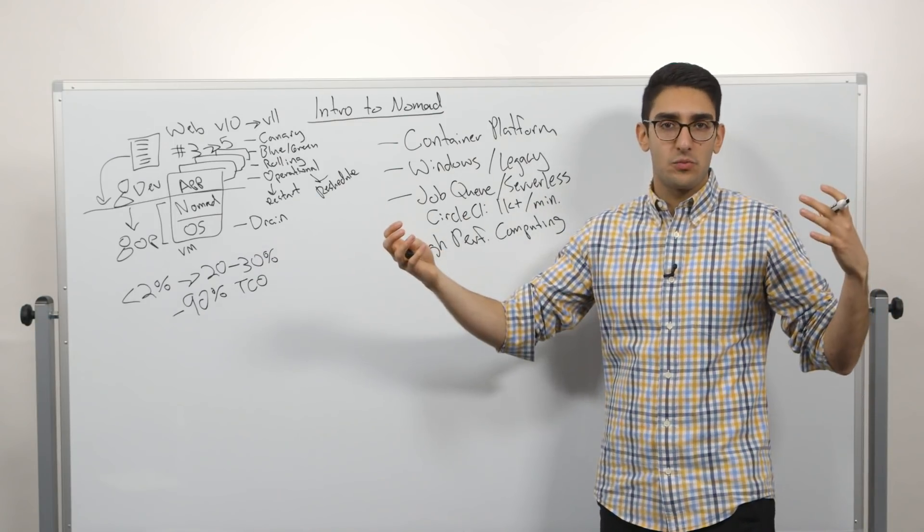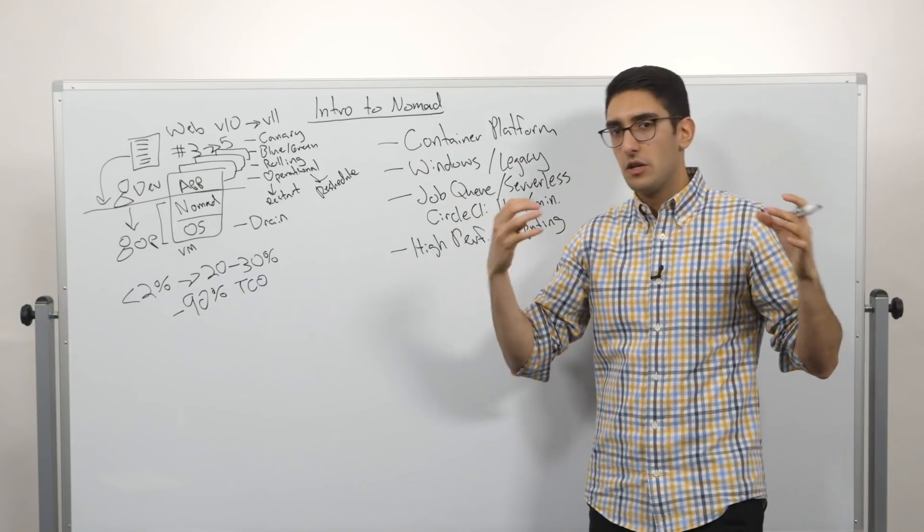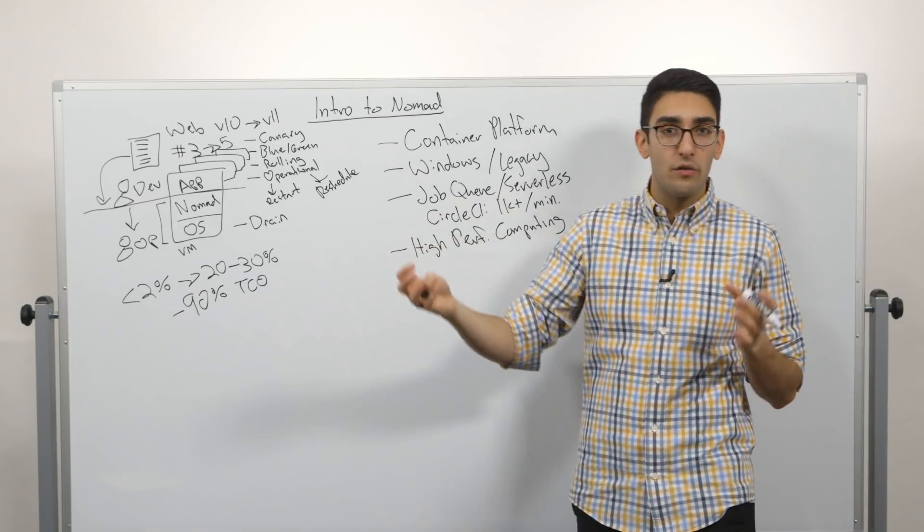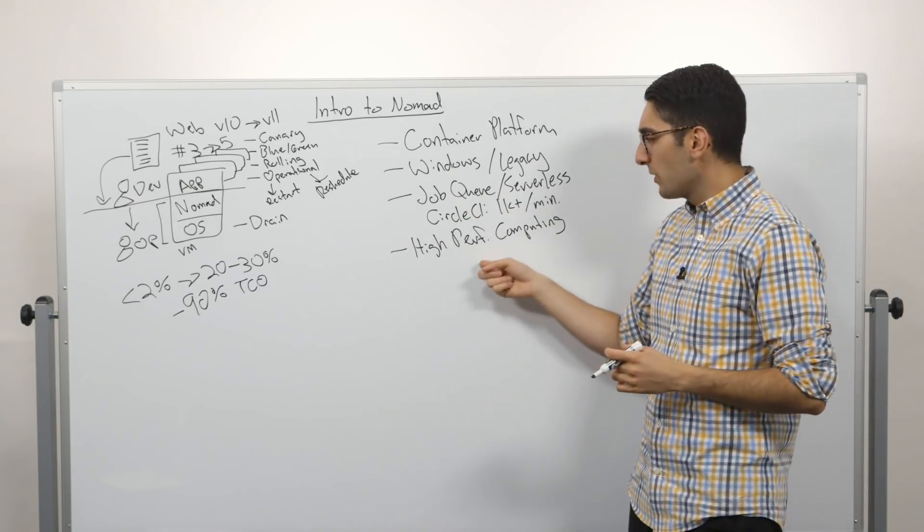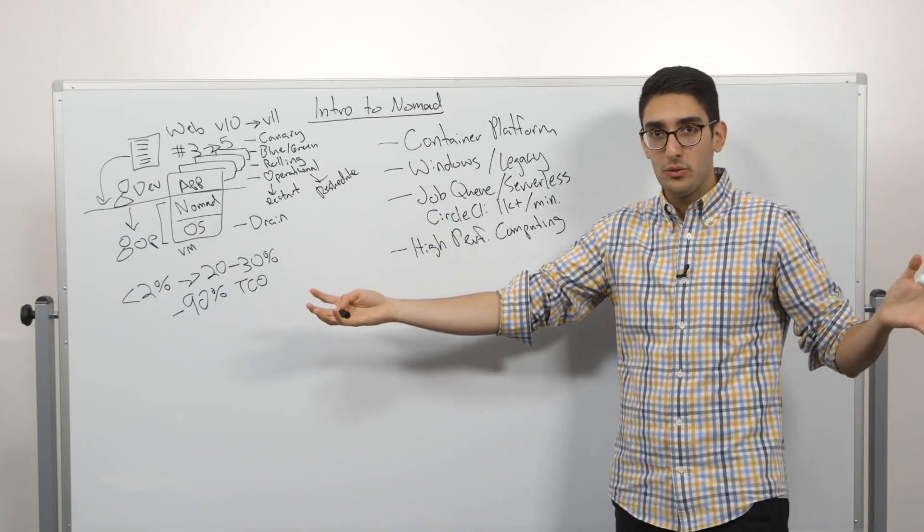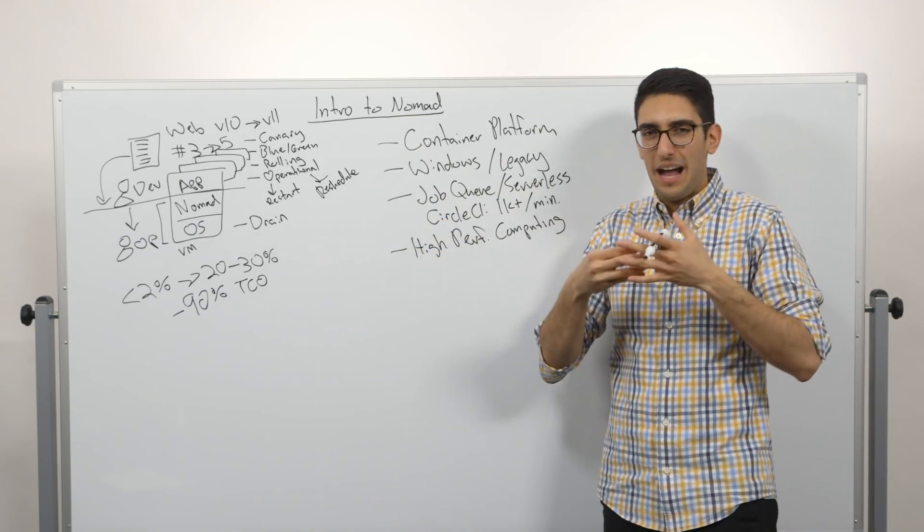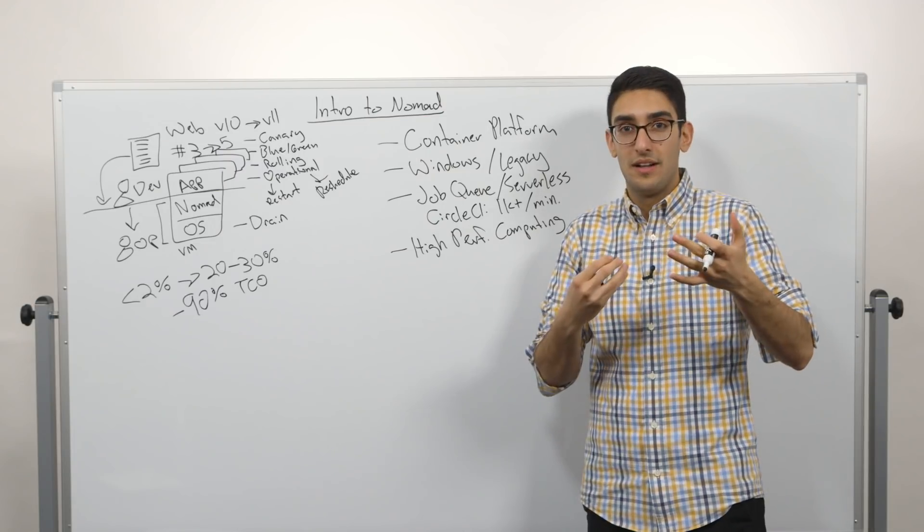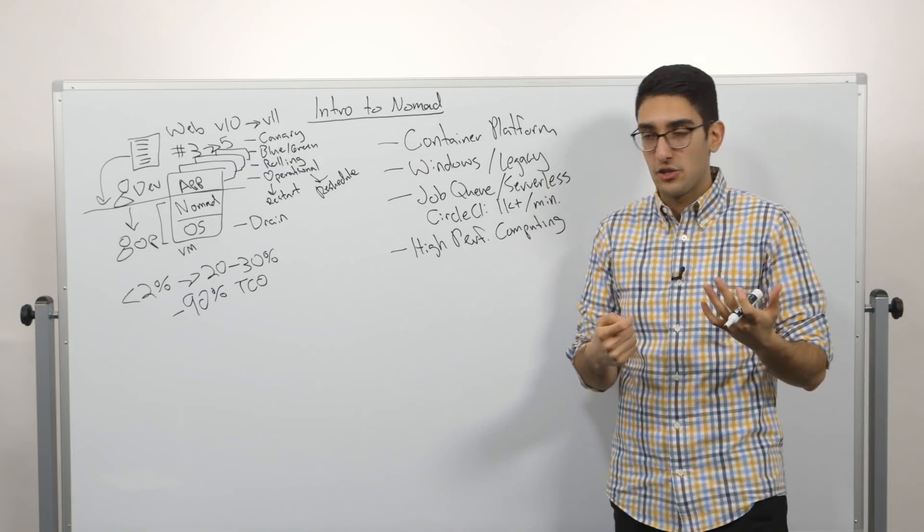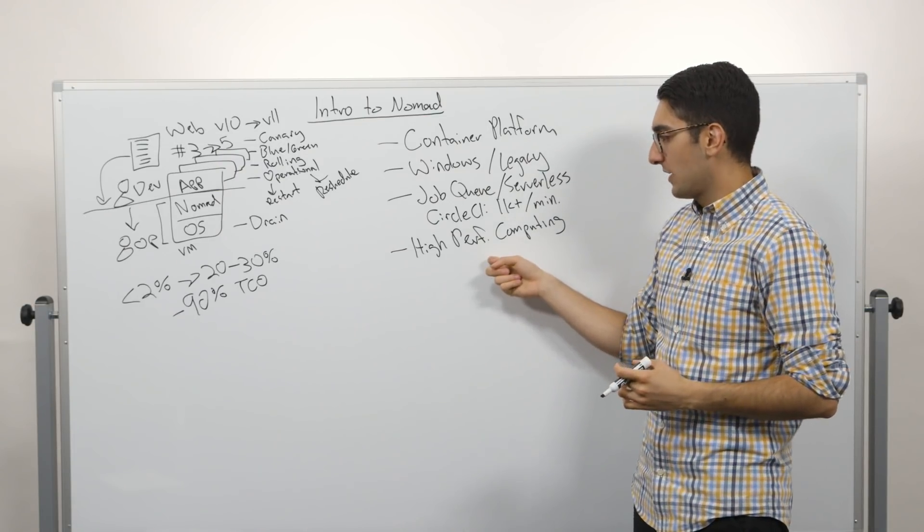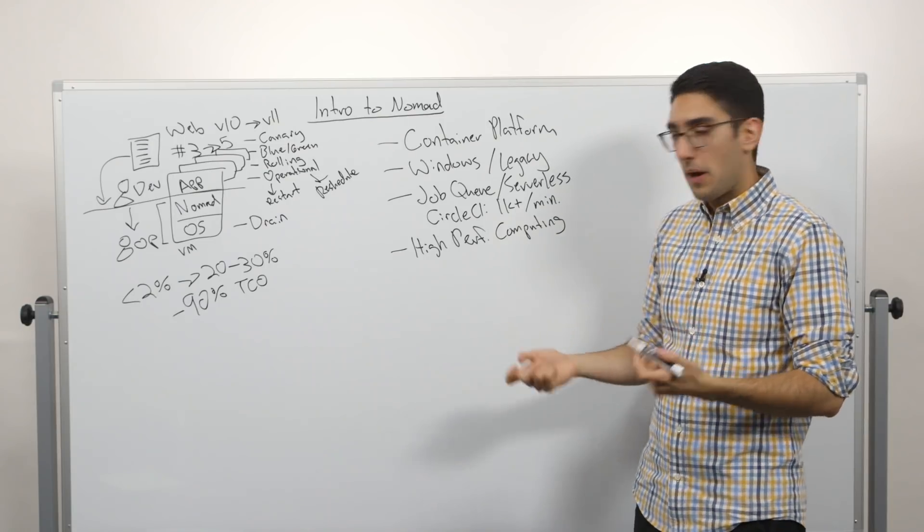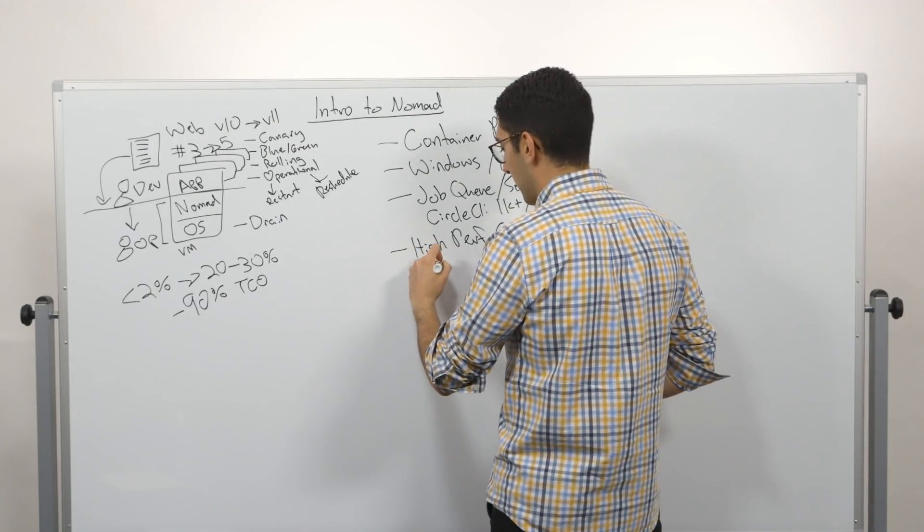Where what really matters to you is being able to consume an enormous amount of compute for a period of time and really caring about how long does it take you to compute some job or some calculation. And so this is an interesting use case that we benchmarked very publicly in what we called the C1M or our million container challenge, which we looked at how quickly could we schedule a million containers on a cluster of 5,000 machines.